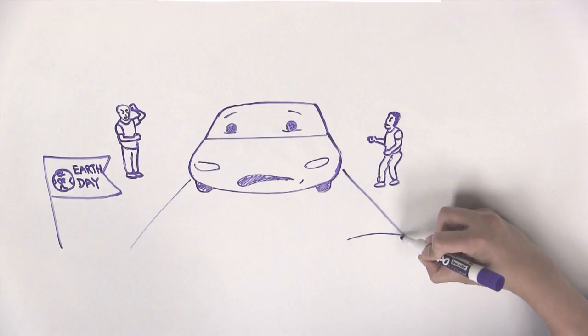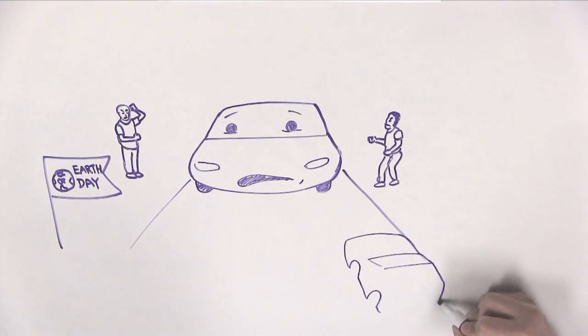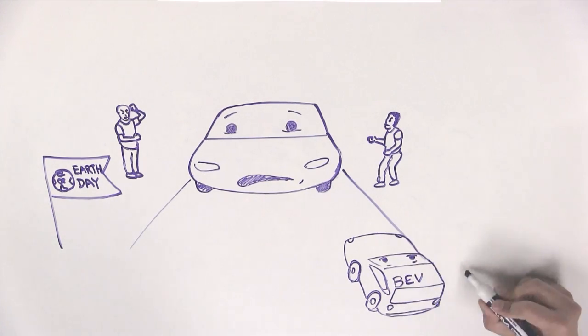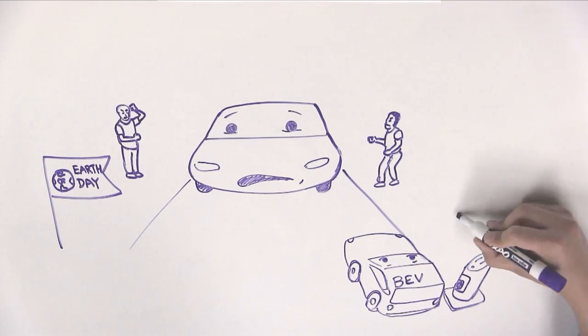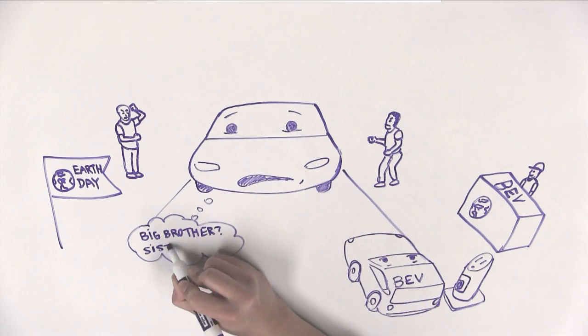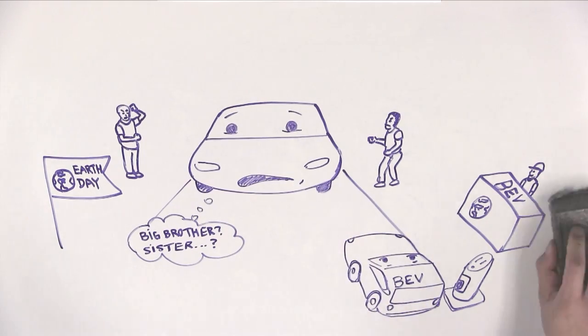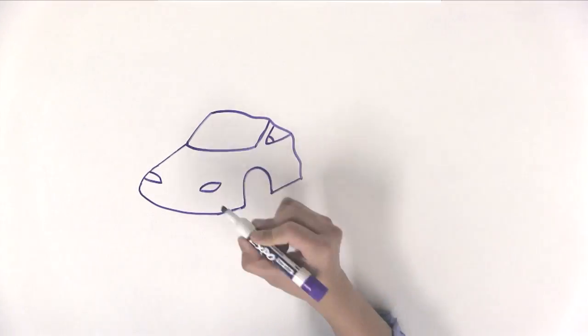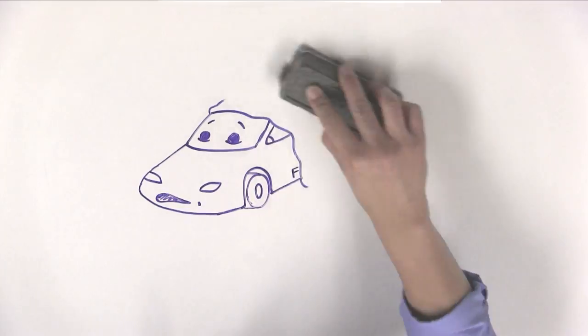Not everyone loved me though. At outreach events, some people called me names like Fool Cell or acted like I was trying to be the only type of alternative fuel car. Some compared my teenage growing pains to grown up gas vehicles. Some said I was not as good as my cousins, battery electric vehicles. The jokes and name calling made me sad. I wanted to hide and finish my development in private. But then the haters would have called me a failure.